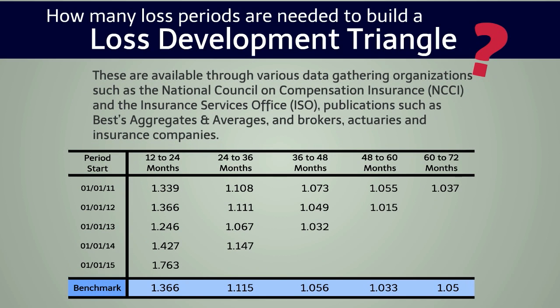Here we see the next step in the loss development triangle process. We see the factors that are being computed for each of the past policy periods for the 12 to 24 months, 24 to 36, and so forth. At the bottom of the table we see the benchmark numbers from either NCCI, ISO, Best Aggregates and Averages, or wherever else you might obtain the information. These benchmarks are important in comparing the experience you're seeing in the client firm against some industry-wide benchmark.